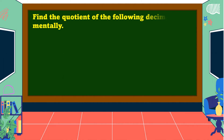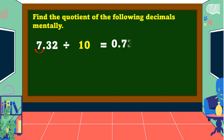For example, find the quotient of the following decimals mentally. Seven-thousandths divided by ten. In dividing decimals by ten, move the decimal point one decimal place going to the left, and the answer is equal to seven-hundred-thirty-two thousandths.